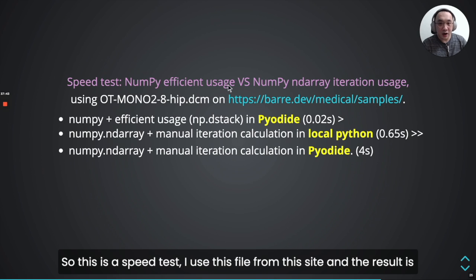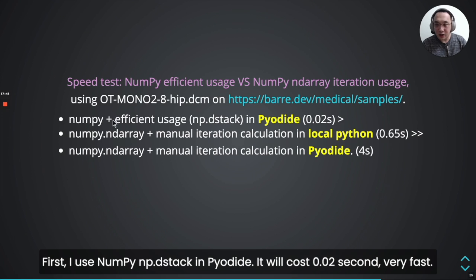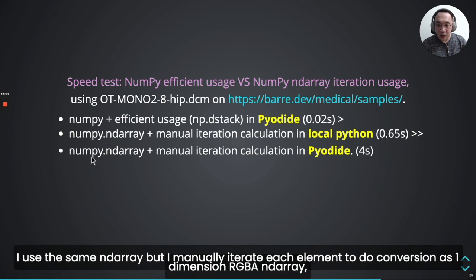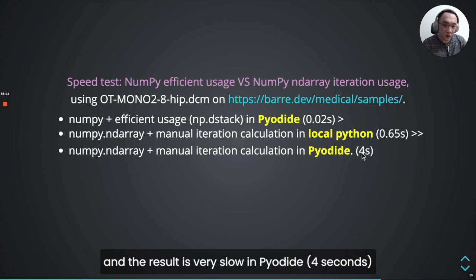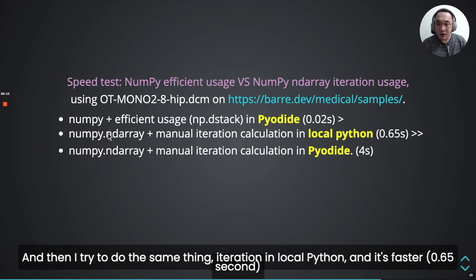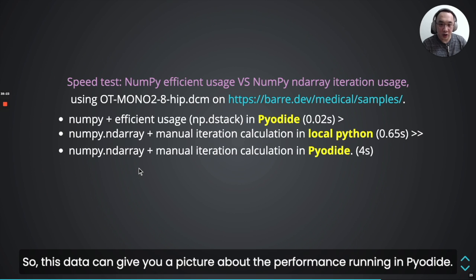I learned two things in this process. First, if you use a different similar NumPy approach — like a NumPy insert approach — to achieve the same result, it will be slower. So always research the best NumPy API for your case. Second, you do not need to manually iterate data to combine it yourself, because it will be slower. It's better to use NumPy API functions.